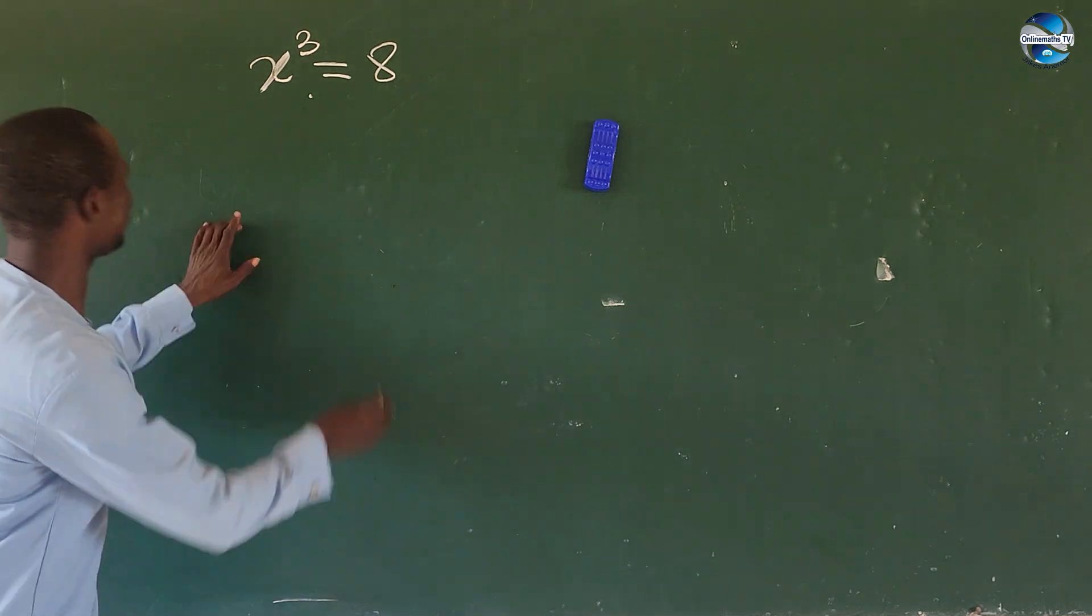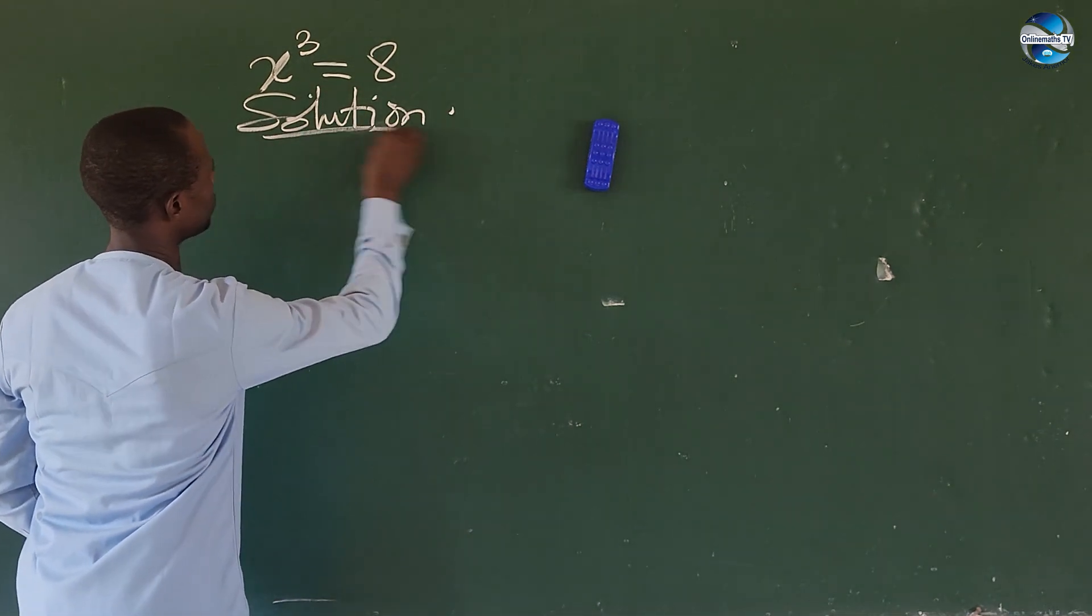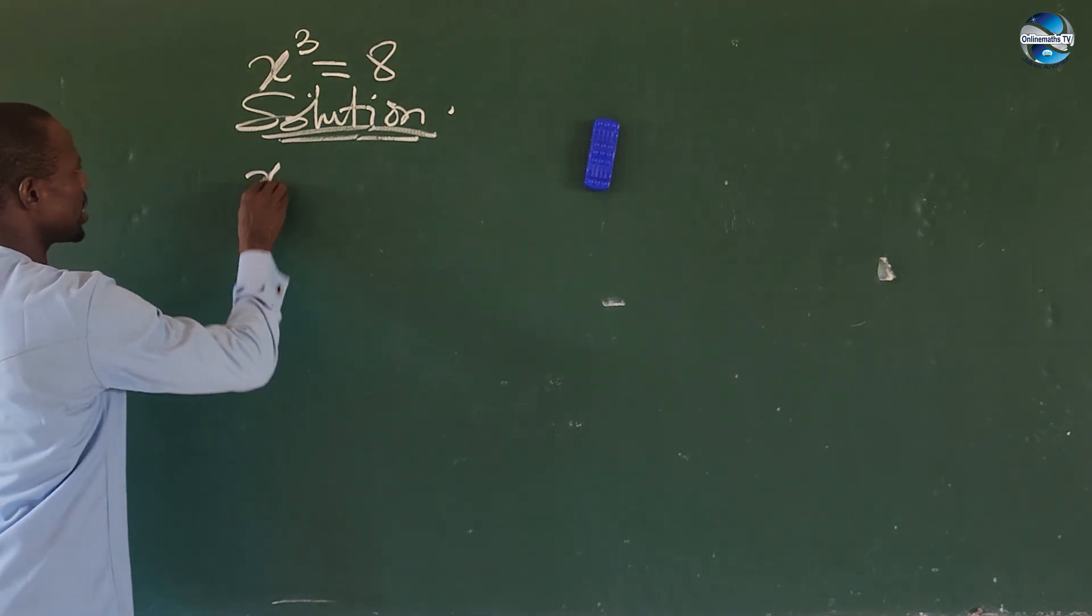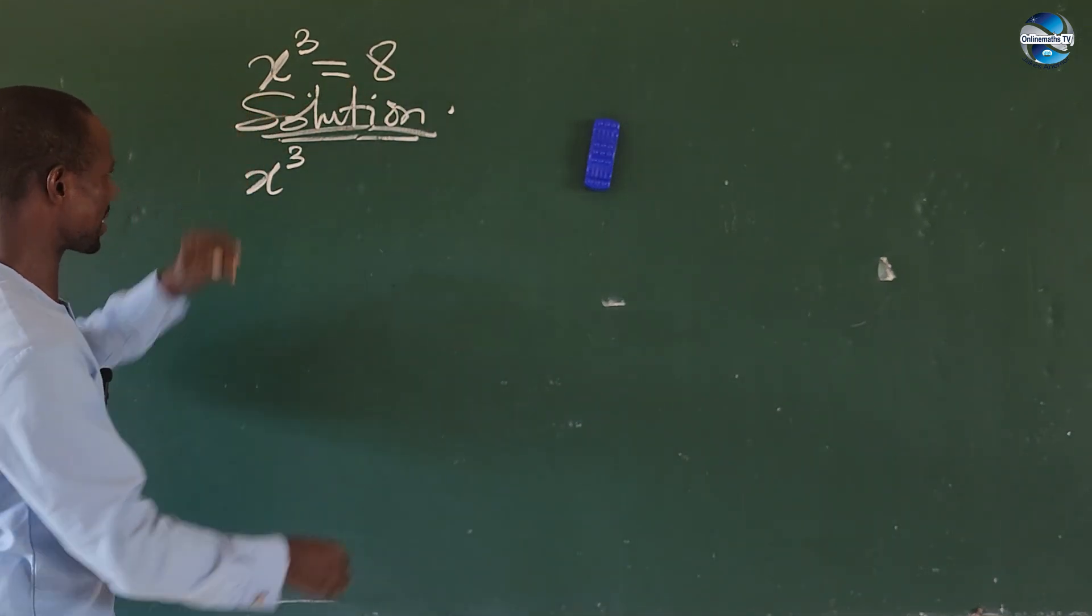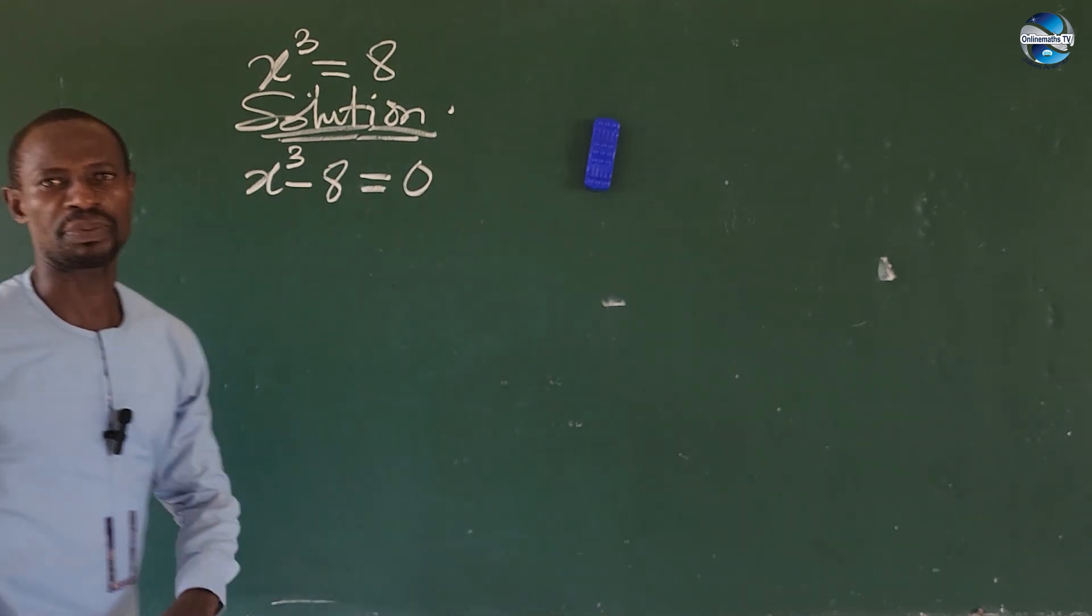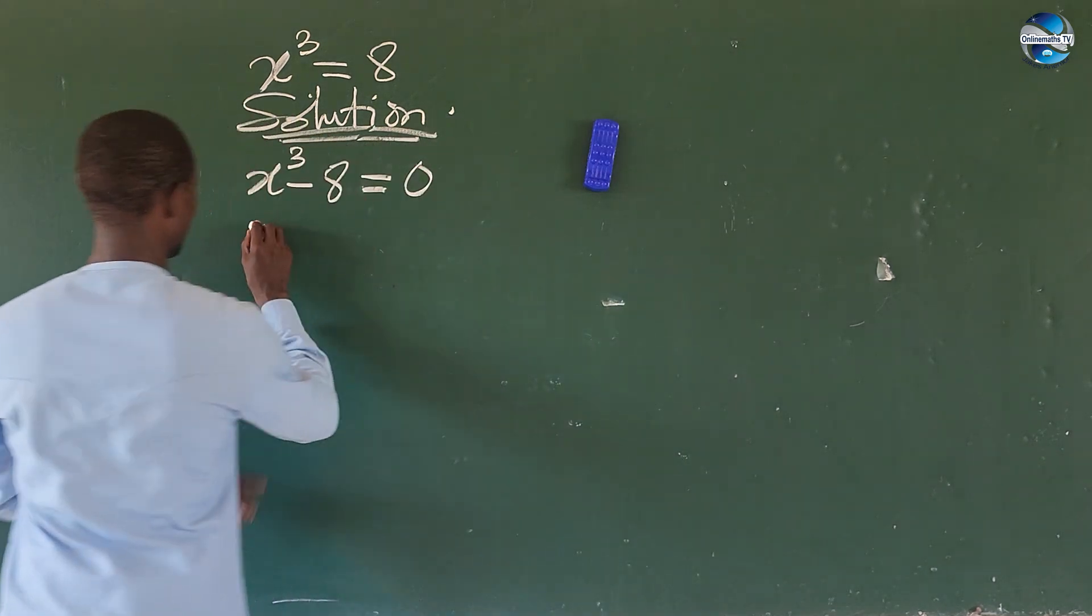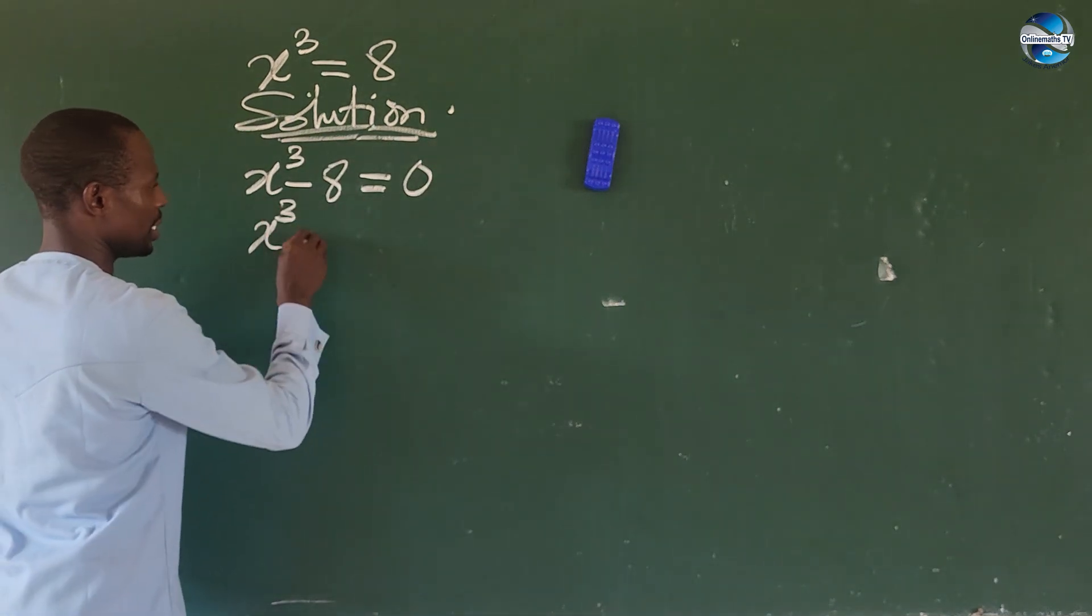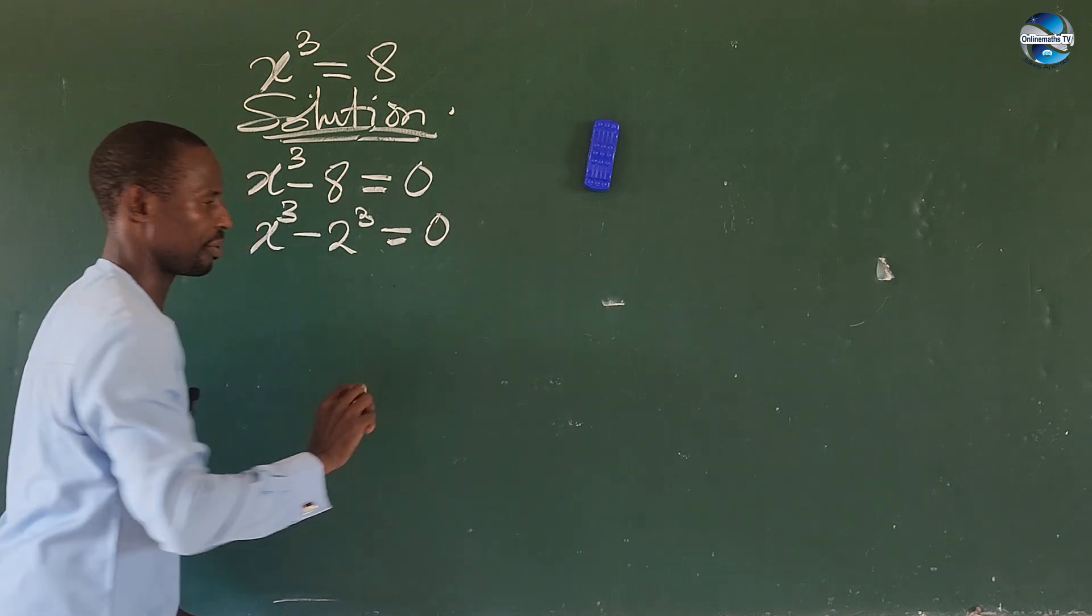Solution. The question is x to the power of 3. I want to move this 8 on the right-hand side to the left-hand side, and this will now give us minus 8 equal to 0. 8 can be expressed as 2 to the power of 3. So this will now give us x³ - 2³ = 0.